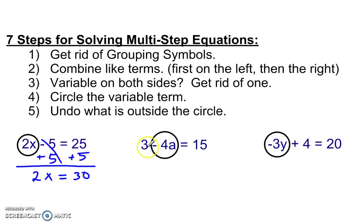Here, eliminate that 3. Now, notice this says minus 4a. We are not going to be adding 3. That negative goes with the 4. The circle helps me remember that. This is a positive 3, so subtract 3 from each side. Now we have negative 4a is equal to 12.